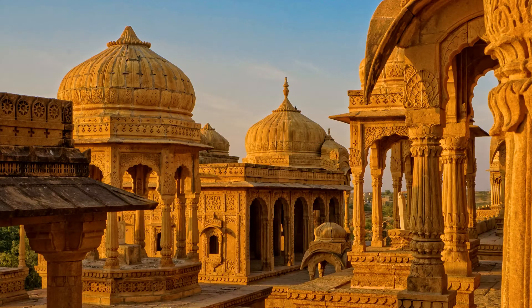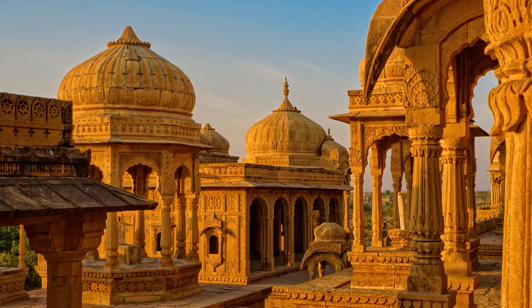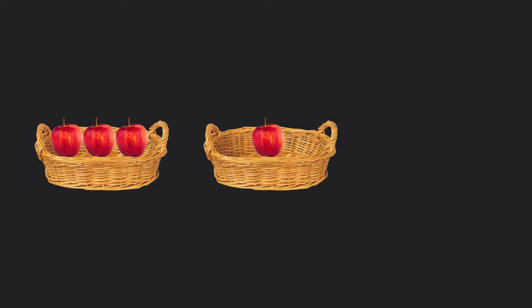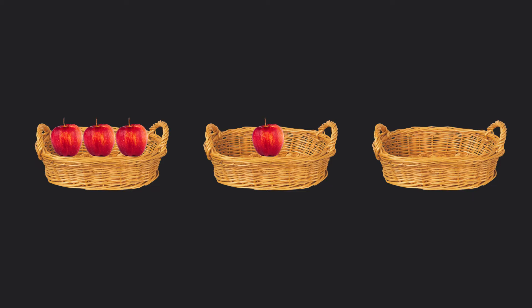So natural numbers are pretty useful, but the story doesn't end here. A few hundred years after that, a mathematician in India named Brahmagupta pondered this: How do I count nothing? For example, if this basket has three apples and this basket has one apple, how do we represent a basket with no apples?